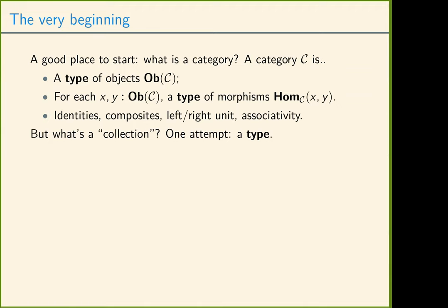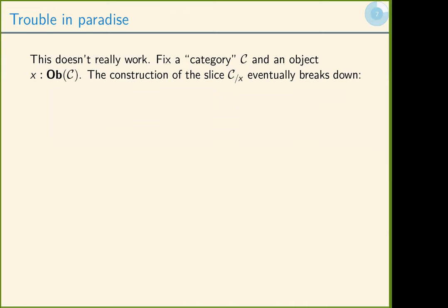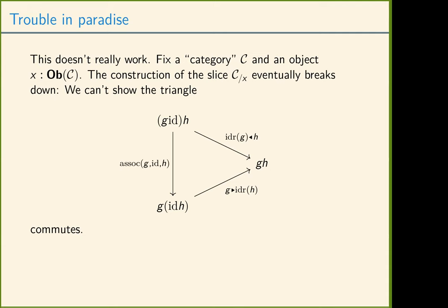This kind of works — it looks like a category — but it doesn't really work. If you have one of these categories and you want to take the slice over an object, you can define the type of objects, morphisms, identities, and composition. But when you start to prove the laws, it breaks down. Specifically, if you want to prove the left identity law, after some path manipulation, you have to show that this triangle commutes. And nothing in the definition of categories indicates that this triangle commutes. In fact, if you look up bicategory on the nLab, you'll see that they specifically require this exact triangle to commute.